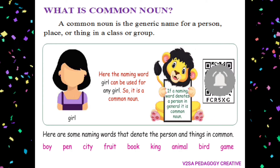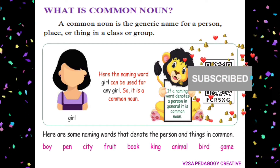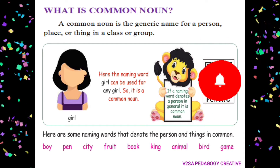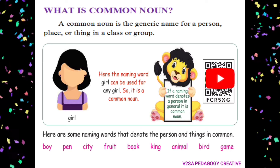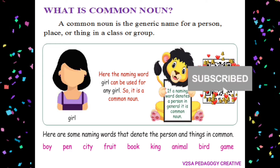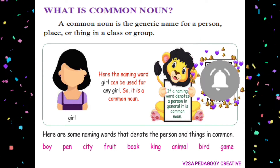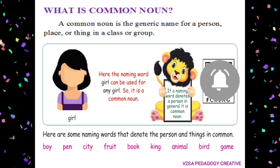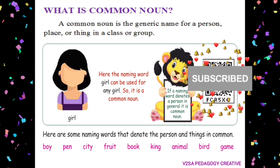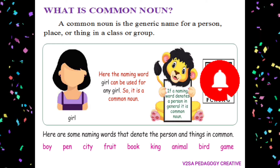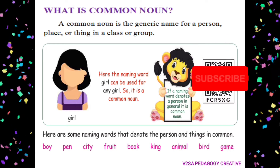For example, fruits: apple, mango, grapes. And there are animals — for example, it is a common noun. Animal: cat, dog, lion, tiger. It is all common. I say animal — that is a common noun.